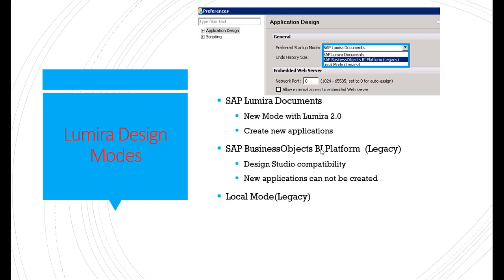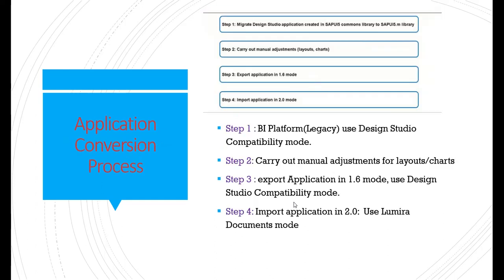The second mode is SAP Business Objects BI Platform mode, which was for Design Studio 1.6. Applications built in Design Studio 1.6 can be converted to Lumira Designer using this mode. Legacy mode is for previous applications from Lumira or Design Studio. To do this conversion, we need to follow specific steps.